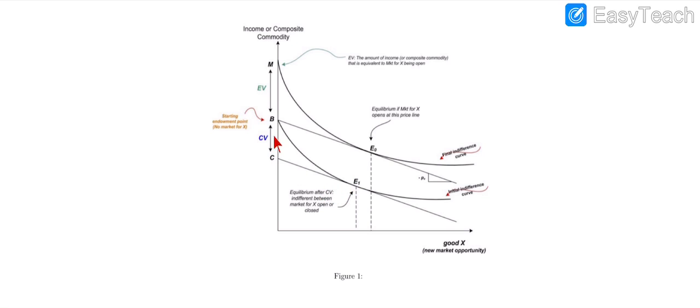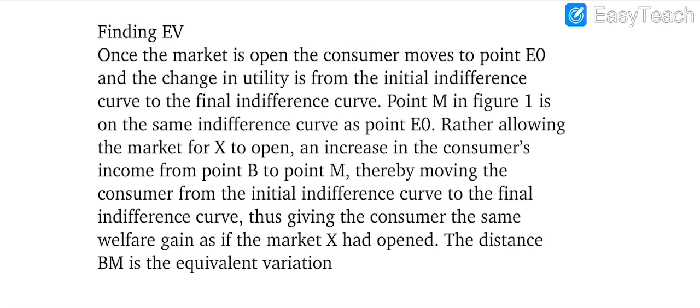If the consumer, instead of moving onwards, moves upward from B to M, the amount of income or composite commodities is equivalent to the market for X being open. This variation will represent the equivalent variation, EV. The distance from B to M is presenting the equivalent variation.